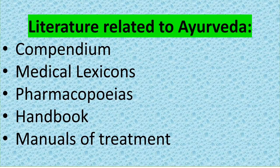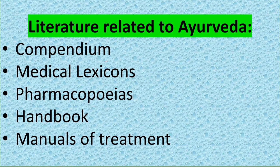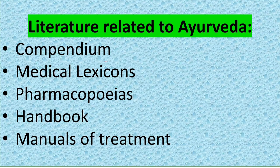Regarding various literatures related to Ayurveda: first is the compendium. A compendium is a collection of concise but detailed information about a particular subject. In the compendium of Ayurvedic literature, we find detailed information about various diseases, cure methods, and types of medicines.